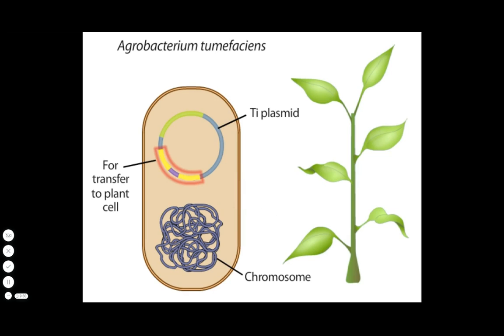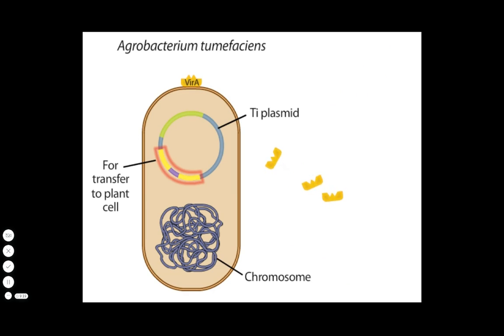Agrobacterium, which is ubiquitous in the soil, begins to communicate with plant cells at a wound on the plant body. The wounded plant releases phenolic compounds that, depending on the species involved, Agrobacterium recognizes.